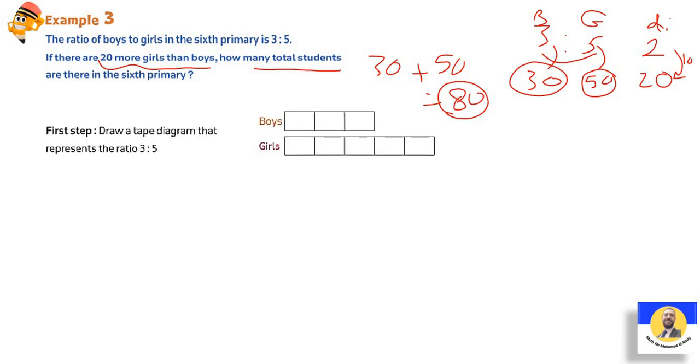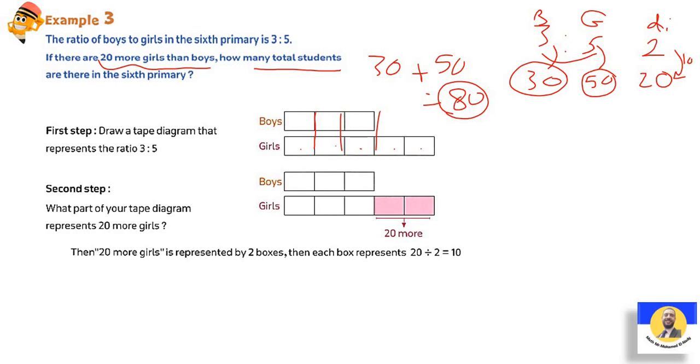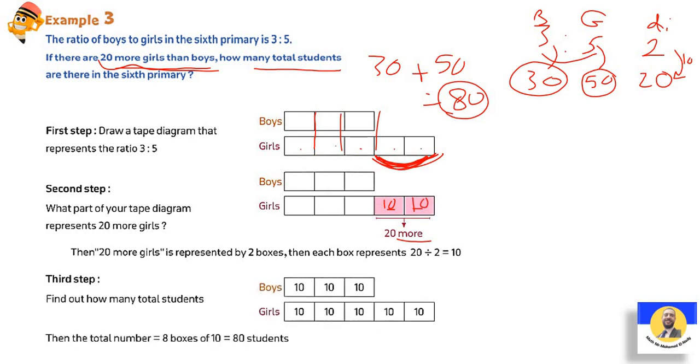Can we solve it by using tape diagram? Yes. We have 3 boys and 5 girls. Take care, you must draw them the same. After that, he said 20 more girls, that's the 2 tape diagrams here extra, representing 20. So each one of them represents what? 10. Each one is 10, since 20 divided by 2 is 10. When these are 10, then these are also 10, 10, 10, 10, 10. So how many tens do you have? We have 8 tens in total. So the total will be 80 students, boys and girls together. Should we solve by tape or without? According to the question, unless it says solve by using your method or solve by using tape diagram specifically.